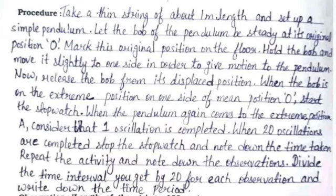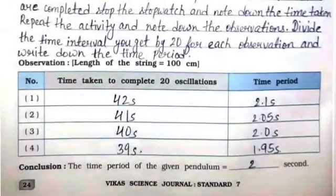When the bob is at the extreme position on one side of mean position O, start the stopwatch. When the pendulum again comes to the extreme position, consider that one oscillation is completed. When 20 oscillations are completed, stop the stopwatch and note down the time taken. Repeat the activity, note down the observations, divide the time interval by 20 for each observation, and write down the time period.